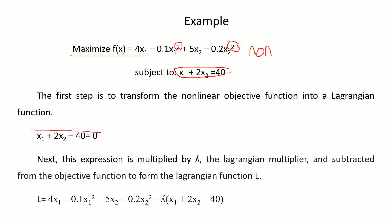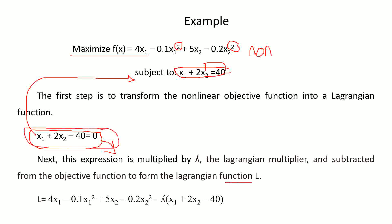Before that, let's rewrite the constraint as x₁ + 2x₂ − 40 = 0. We simply move 40 from the right side to the left side. This expression is then multiplied by lambda, the Lagrangian multiplier, and subtracted from the objective function to form the Lagrangian function L.